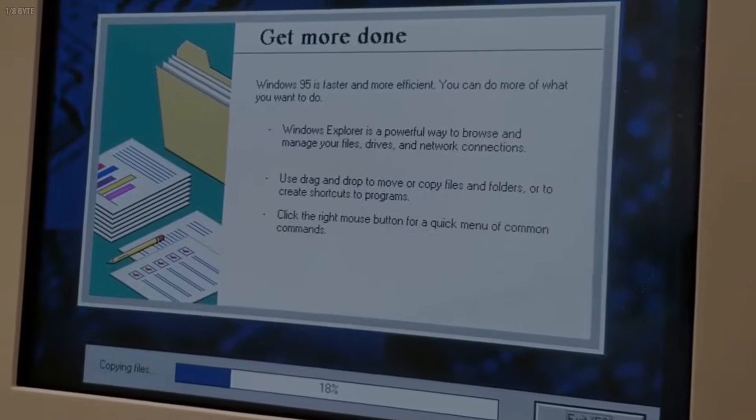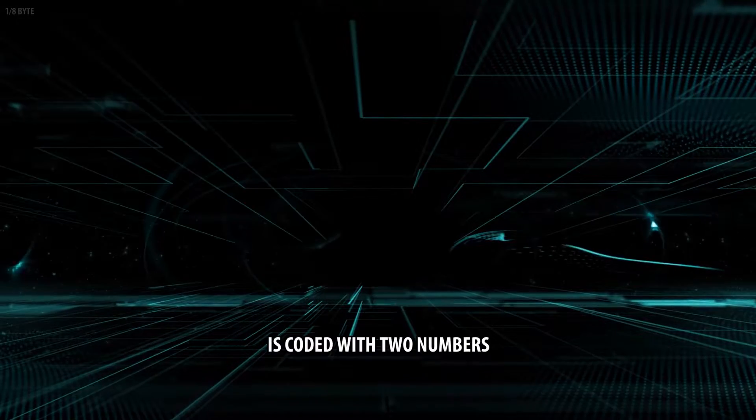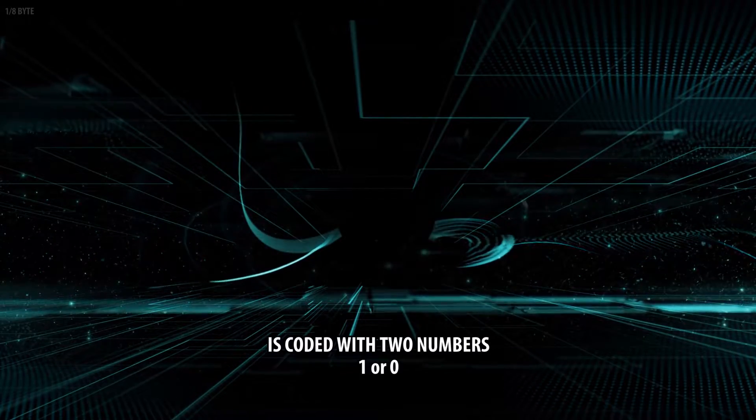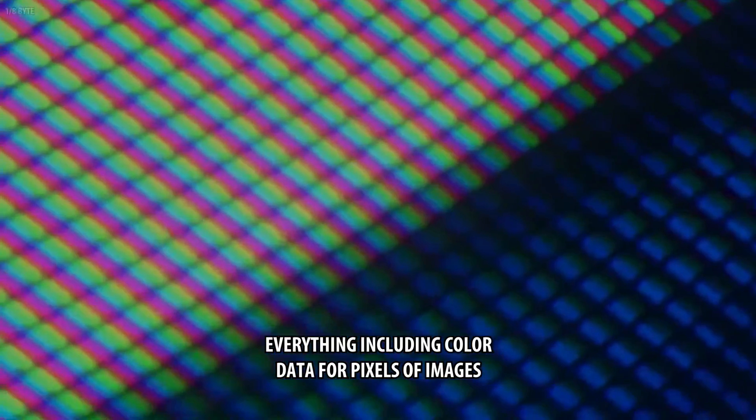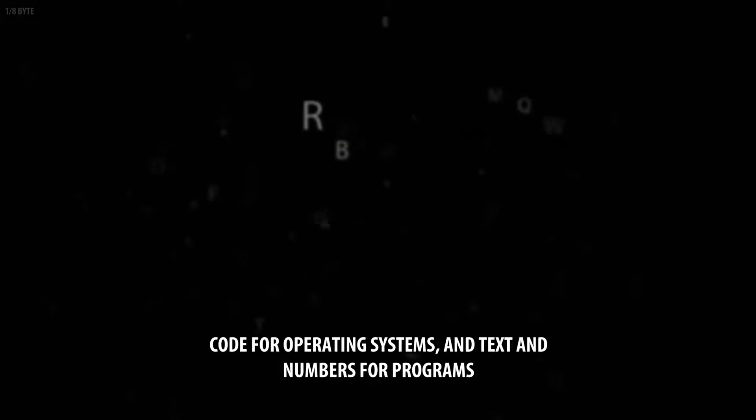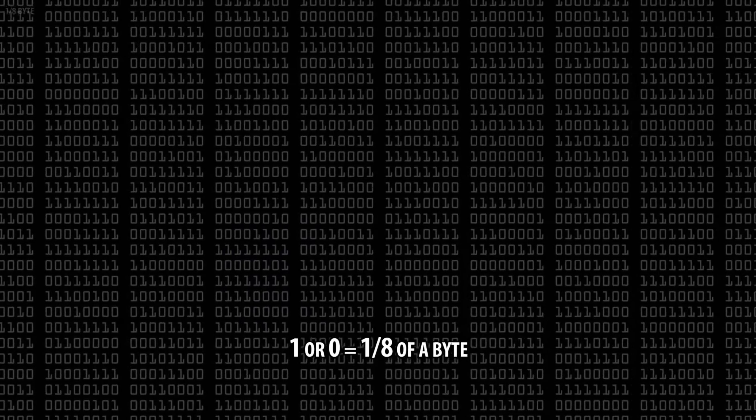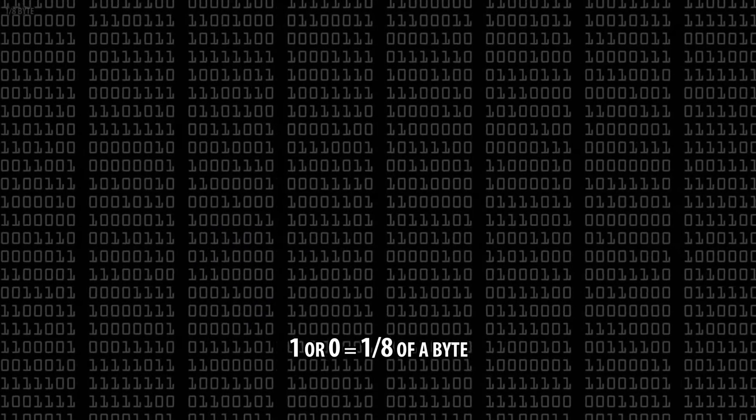Let's start with the 1/8th byte. Every piece of information on computers is coded with 2 numbers, 1 or 0. Everything including color data from pixels of images, code for operating systems, and text and numbers for programs. 1 and 0 equals to 1/8th of a byte.